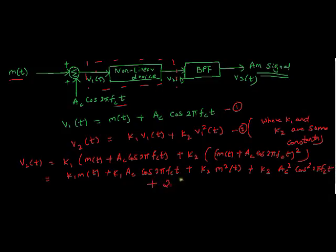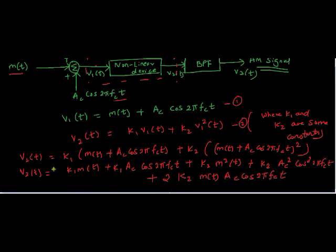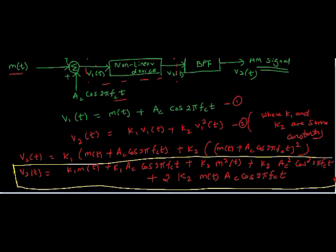Plus K2*Ac²*cos²(2πfct) plus 2 times K2*m(t)*Ac*cos(2πfct). This is my V2(t) equation. We are now here. That is our V2(t) equation.